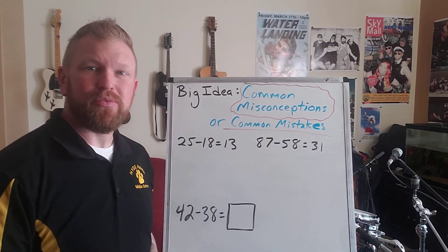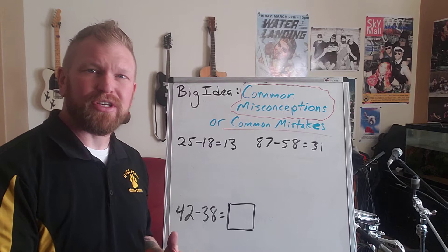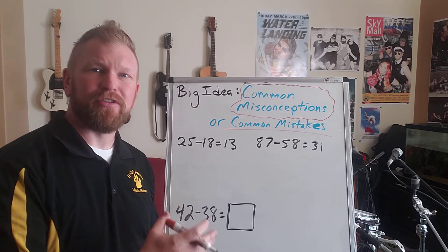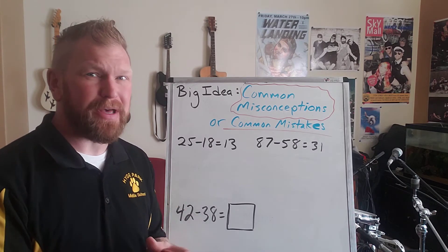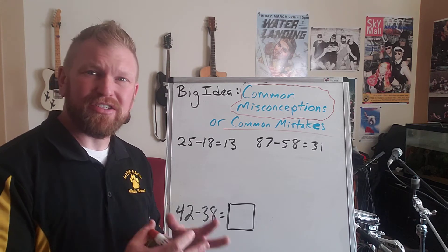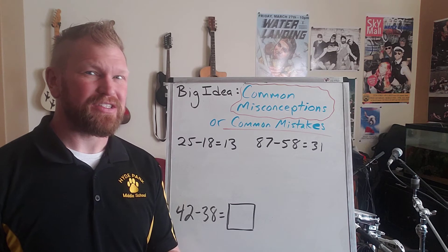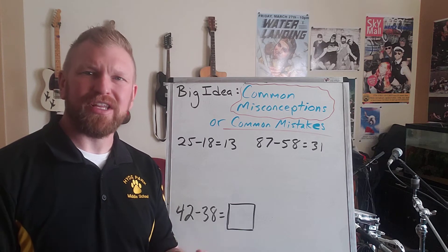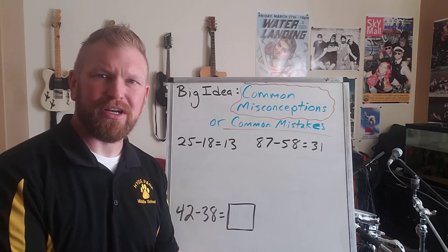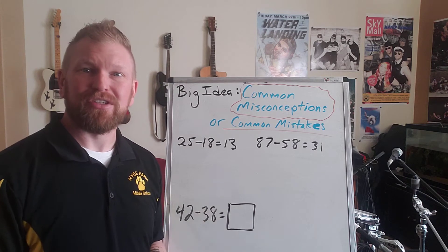One of the best ways to help students learn a new skill and get confident with it is to expect where they might make mistakes and anticipate where they're going to make the mistakes. That way, if they make those mistakes that you anticipated, you can help understand what's happening and then help to correct the understanding and fix the misconception.